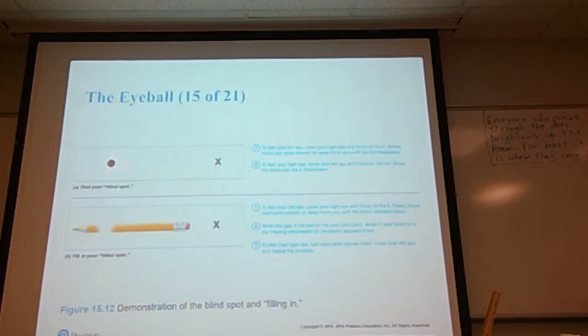The eyeball blind spot: to test your left eye, cover your right eye, focus on the X, slowly move your book towards or away from you until the dot disappears—that will be your blind spot. And to test your left eye, do the same, and you will eventually see the two sides of the pencil will come together, the broken pencil will come together at your blind spot.